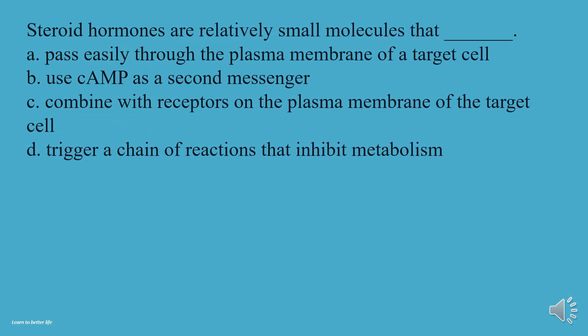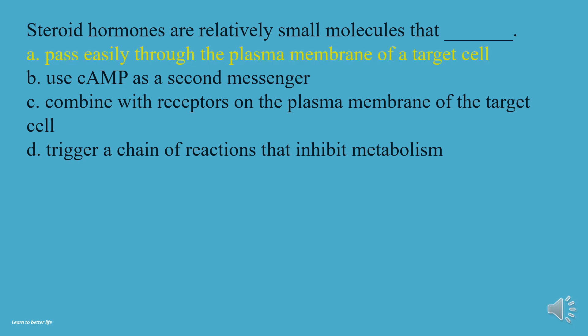Steroid hormones are relatively small molecules that: A, Pass easily through the plasma membrane of a target cell. B, Use cAMP as a second messenger. C, Combine with receptors on the plasma membrane of the target cell. D, Trigger a chain of reactions that inhibit metabolism. The answer is A.